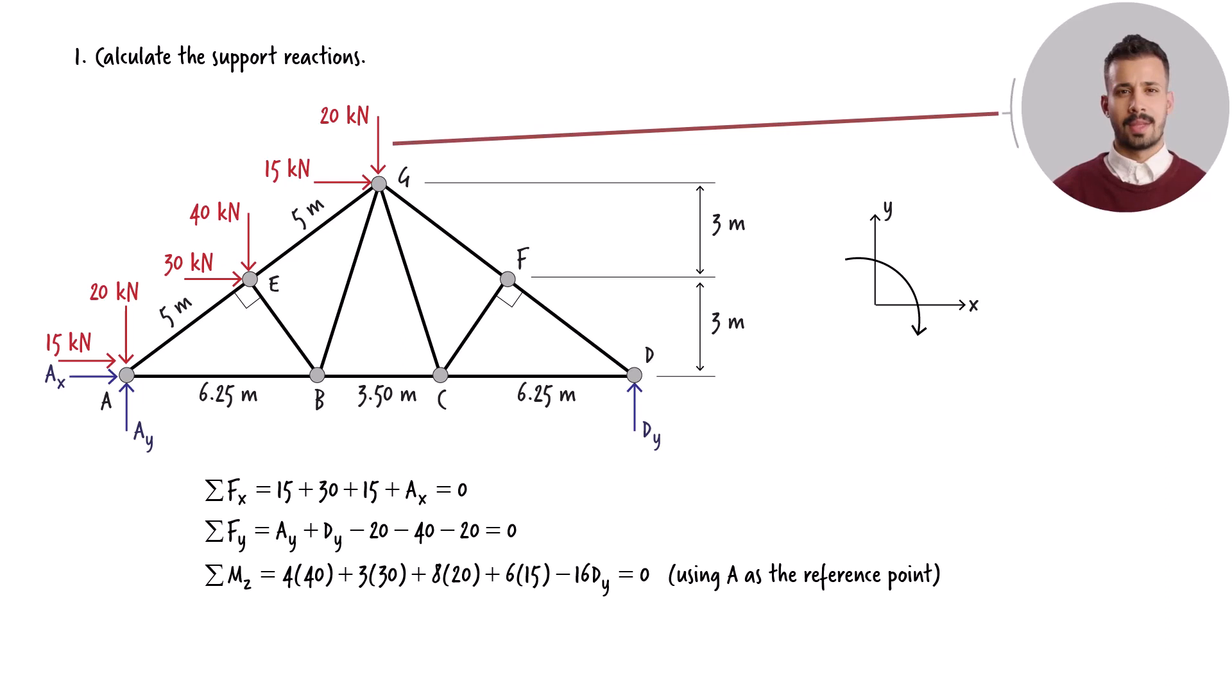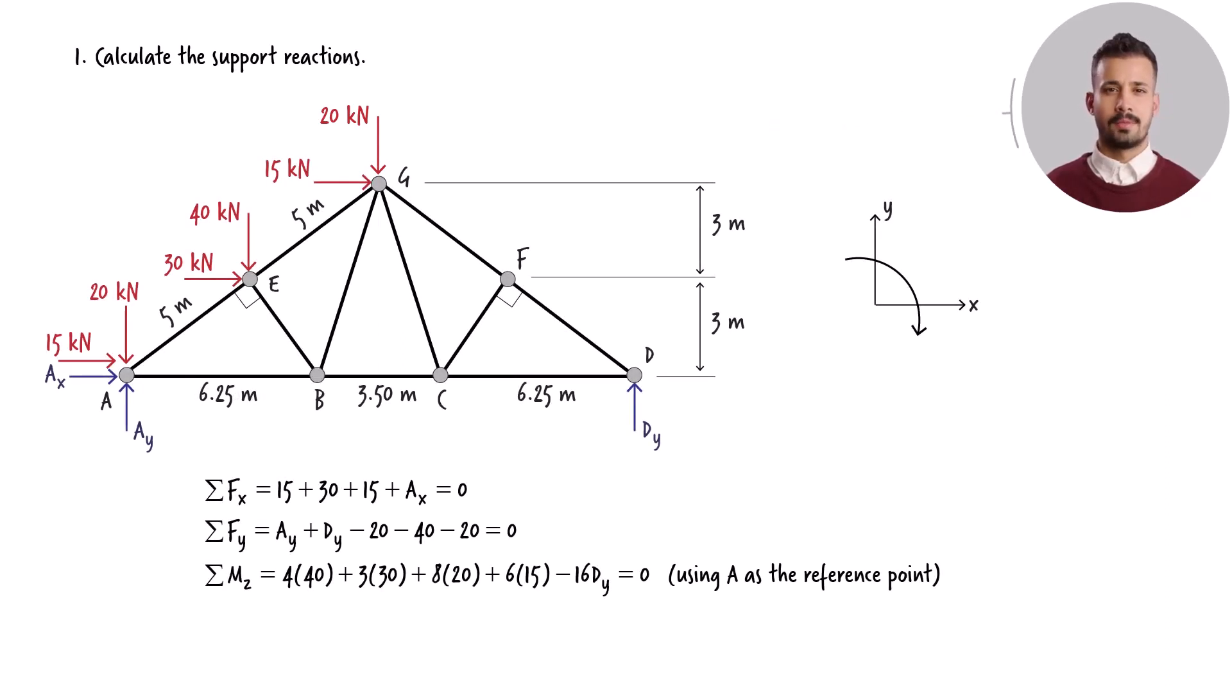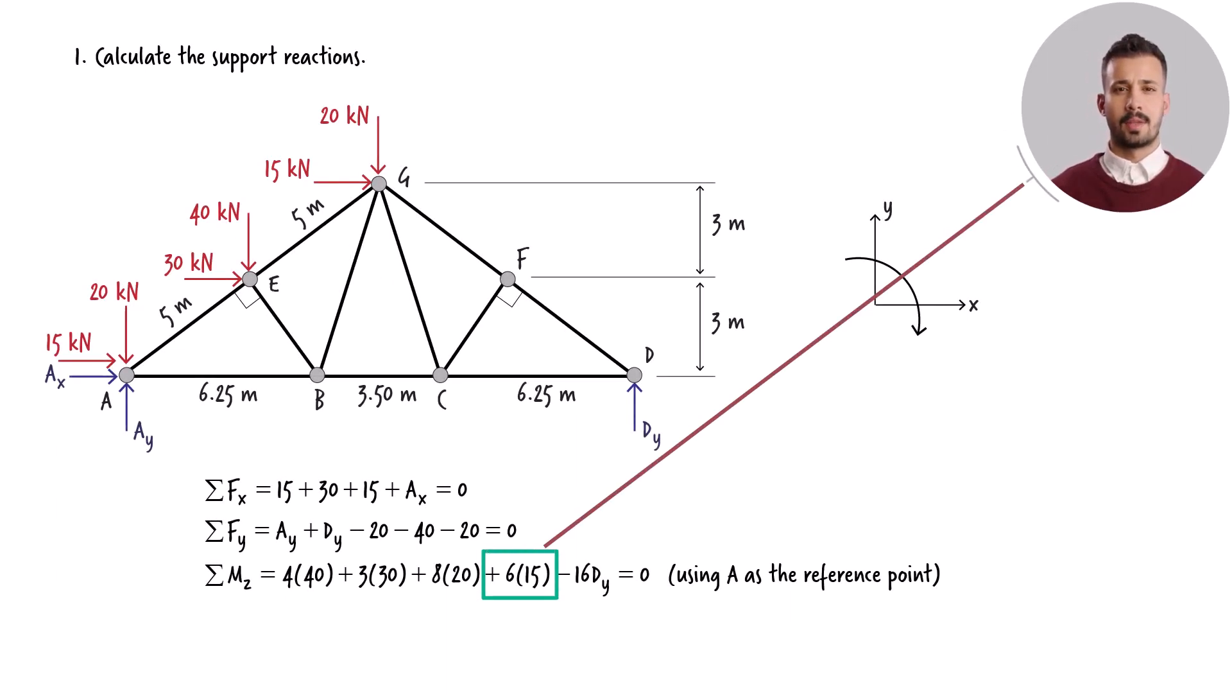The moment arm for this load is 8 m. Hence, we have 8 times 20 here. The moment arm for the 15 kN load is 6 m, which gives us a product of 6 times 15 here.